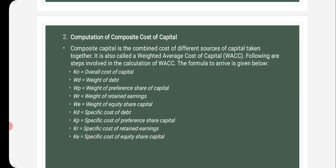KO is the overall cost of capital. WD is the weight of debt. WP is the weight of preference share capital. WR is the weight of retained earnings. WE is the weight of equity share capital. KD is the specific cost of debt. KP is the specific cost of preference share capital. KR is the specific cost of retained earnings. KE is the specific cost of equity share capital. The weighted average cost of capital is computed using the following formula: KW = ΣXW / ΣW.